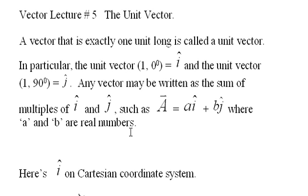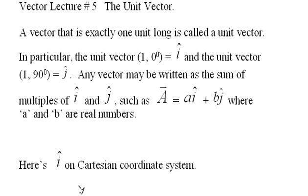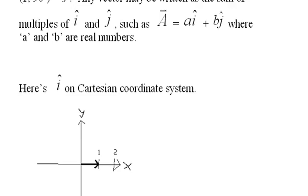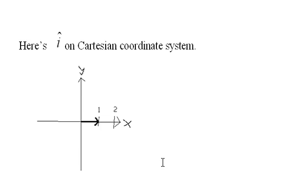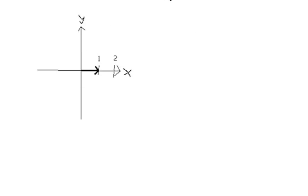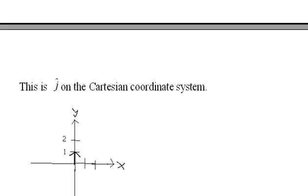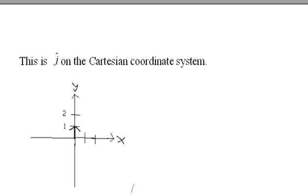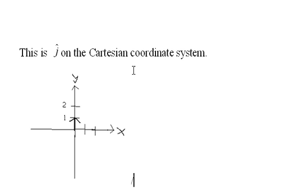Here's i on the Cartesian coordinate system. It's just this vector that goes in this direction, zero degrees, and is one unit long. This is j on the Cartesian coordinate system. Same thing—it's one unit long, but it has an angle of 90 degrees.